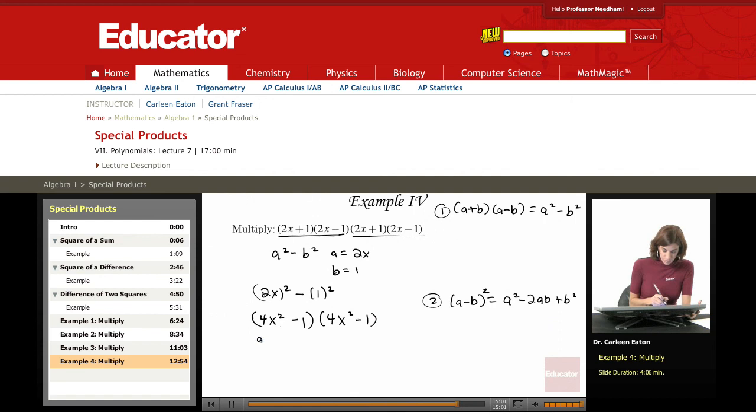Again, my formula, figuring out my a's and b's. a is 4x squared, and b is 1. Substitute in for a squared. I have 4x squared, and I need to square that.